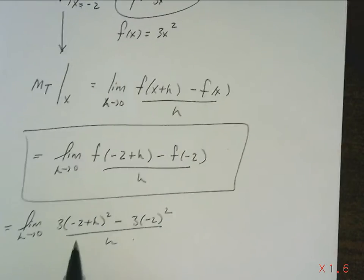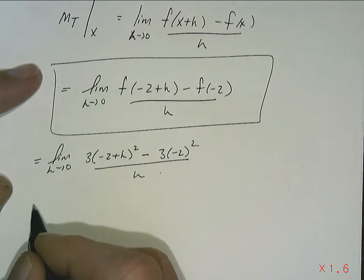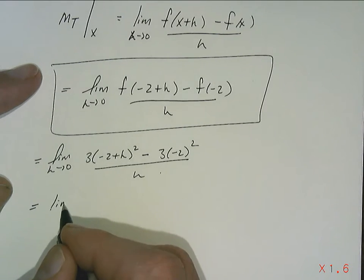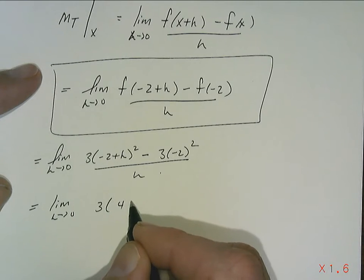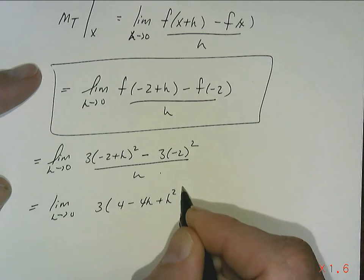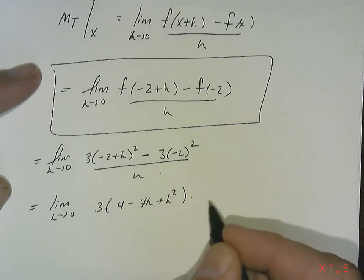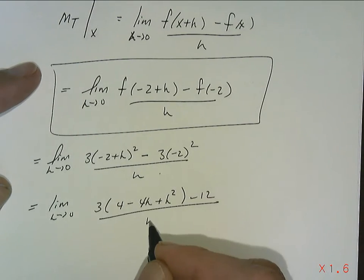Notice if I apply the limit right off the bat, I'll get 0 over 0, which is not a good thing. So it's limit as h approaches 0 of 3 times 4 minus 4h plus h squared. That's going to be 4, so minus 12 over top of h.